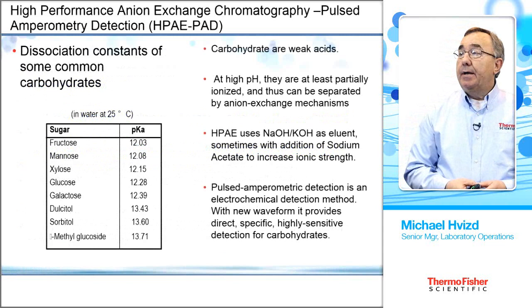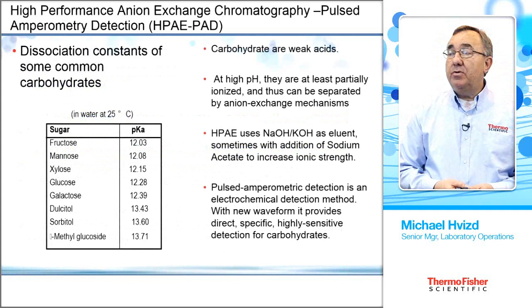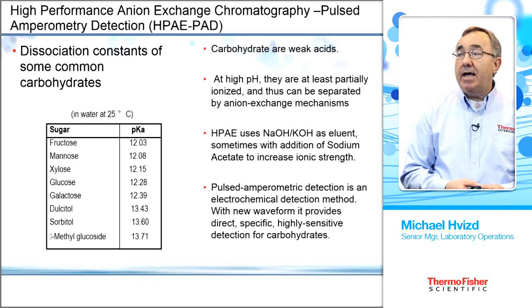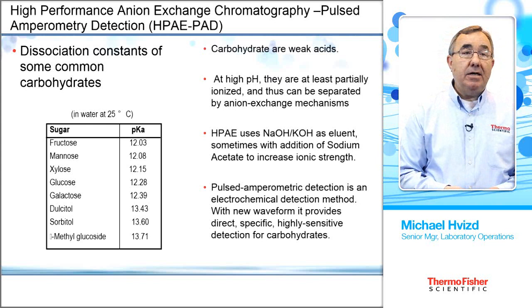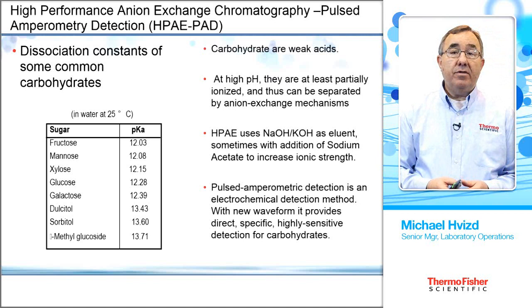Next, we'll see how these samples are able to be separated. Carbohydrates are weak acids, but at high pH we're able to at least partially ionize them, which makes them amenable to separation by anion exchange chromatography. The chart on the left shows the relative pKa's of all those sugar moieties. The higher pKa's are the sugar alcohols, and the lower pKa's are the larger sugars — as they get bigger, the pKa's are smaller. We can then predict where these analytes of interest will elute off the chromatogram.